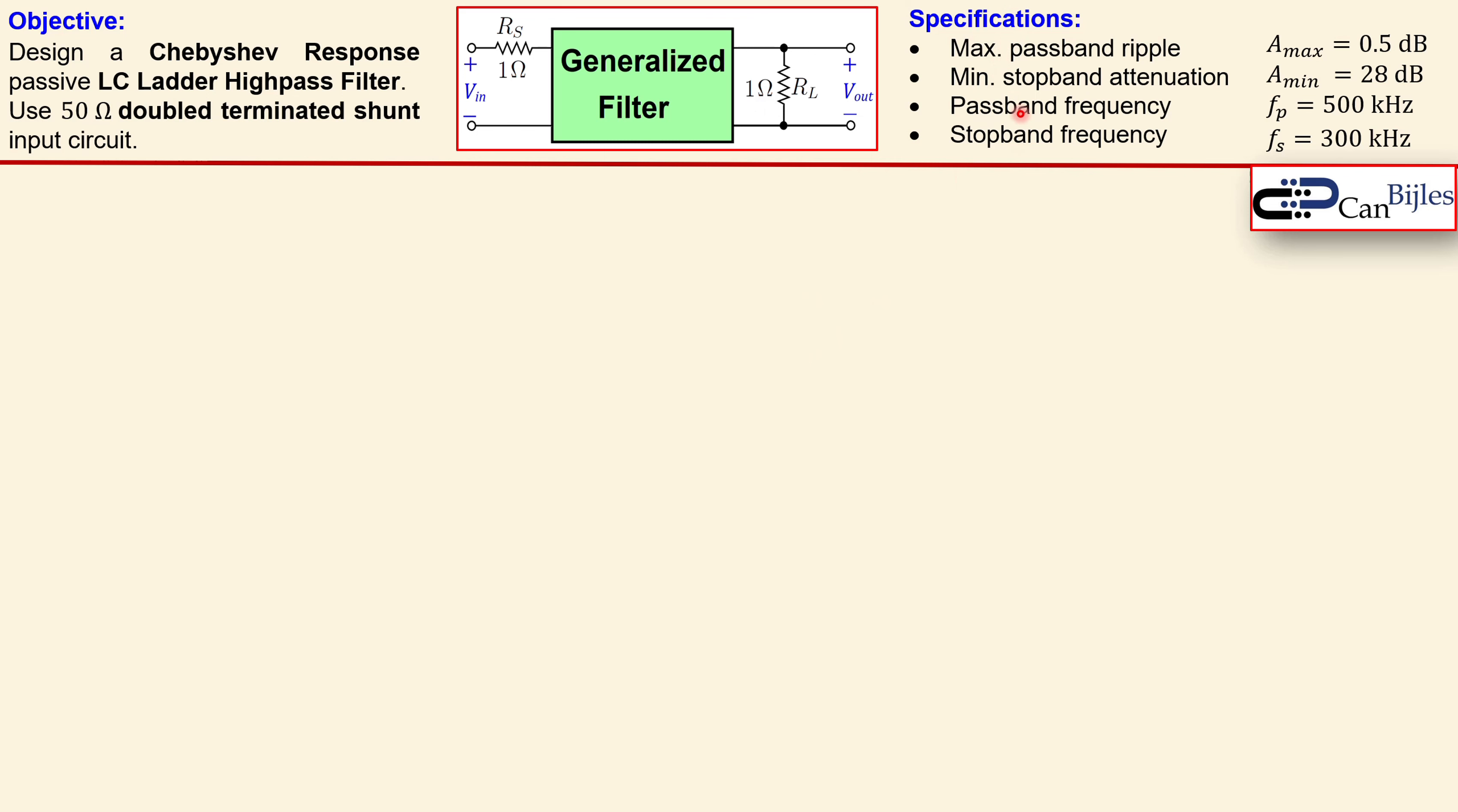The specifications are shown here. We need to have a maximum passband ripple of 0.5 dB. The minimum stopband attenuation must be 28 dB. The passband frequency is 500 kilohertz and the stopband frequency is 300 kilohertz. So let's see how we can work it out.